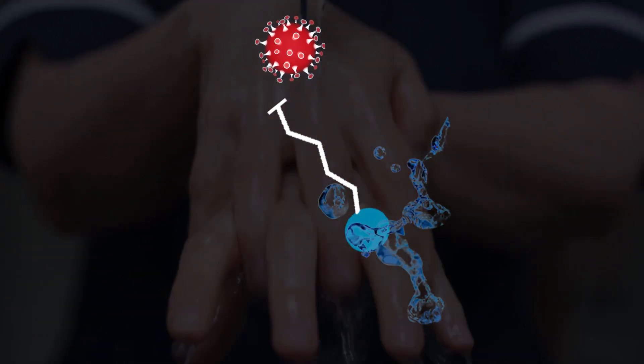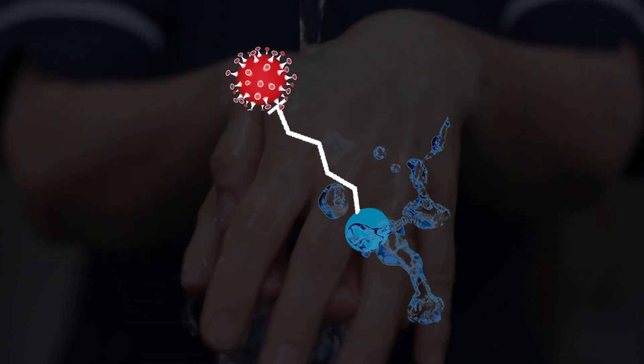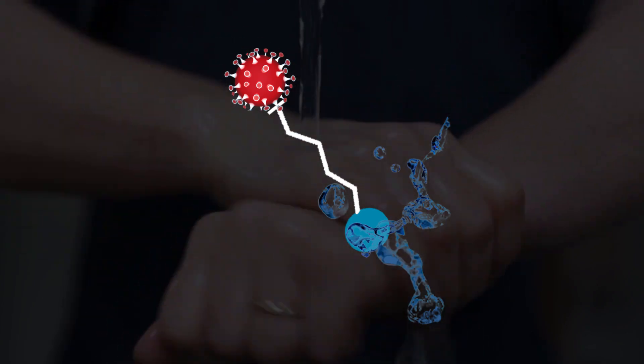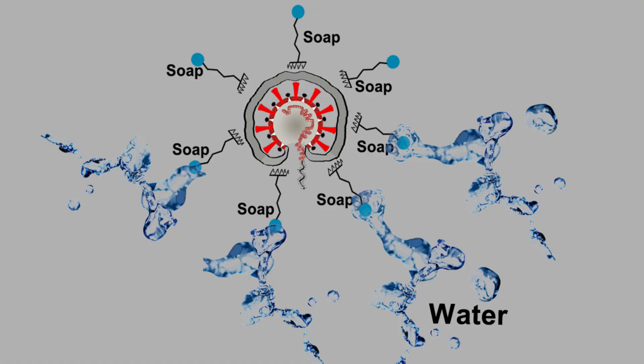That means soap molecules make a bridge by holding water on one side and catching coronavirus on another side. Flowing soap water on your hand means coronavirus and other microorganisms are trapped by soap molecules and washed away along with the water.